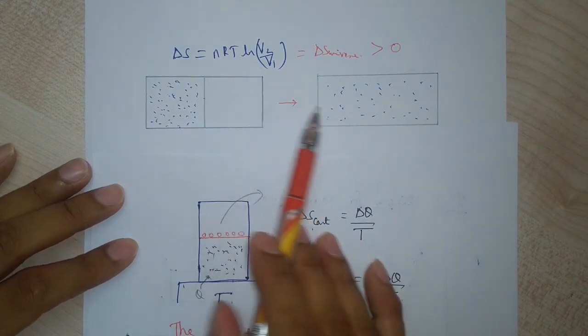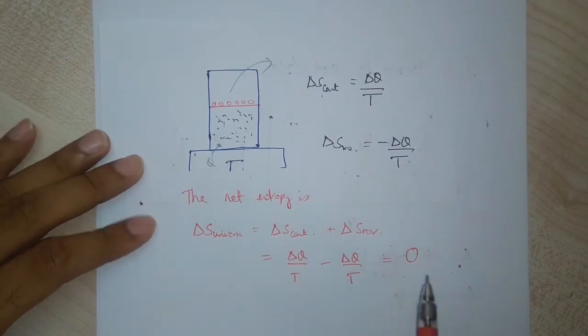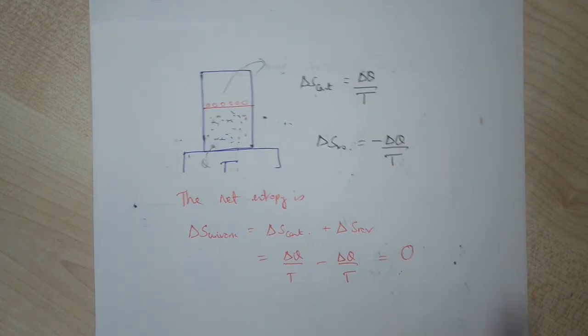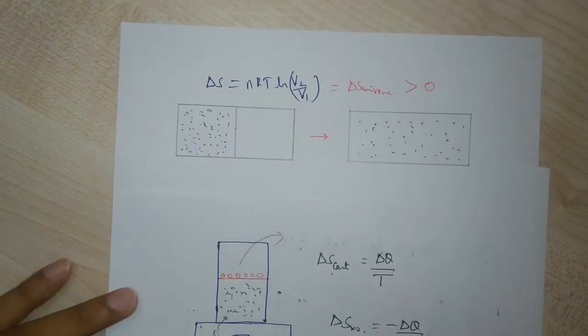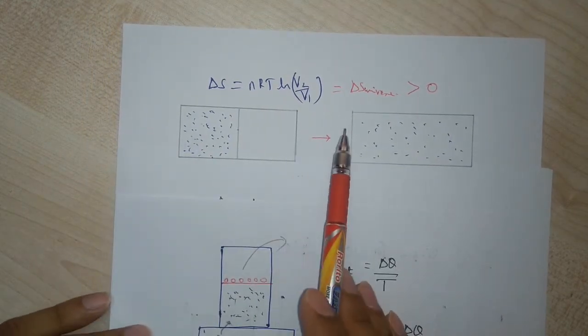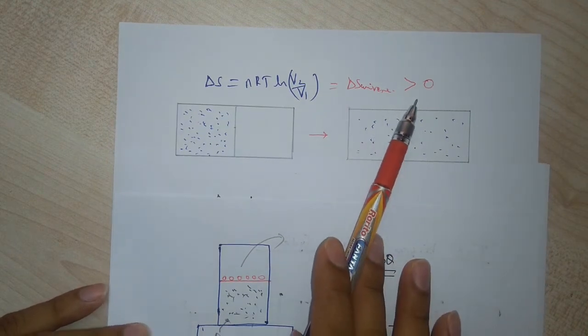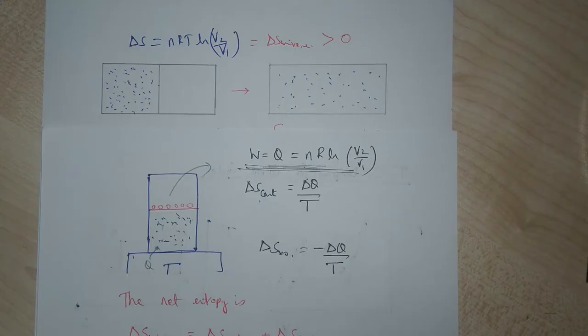For a reversible process, the change in entropy of the universe is equal to zero. But for an irreversible process, the change in entropy is greater than zero. From this we can deduce that entropy increases during an irreversible process and the system loses its ability to do work.